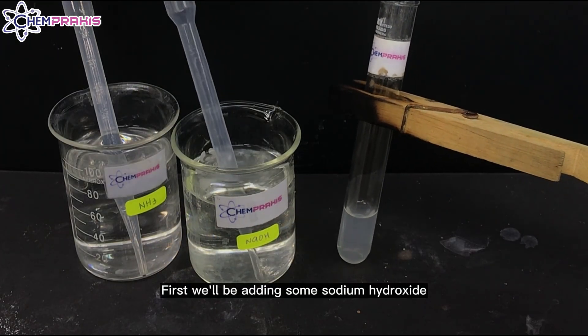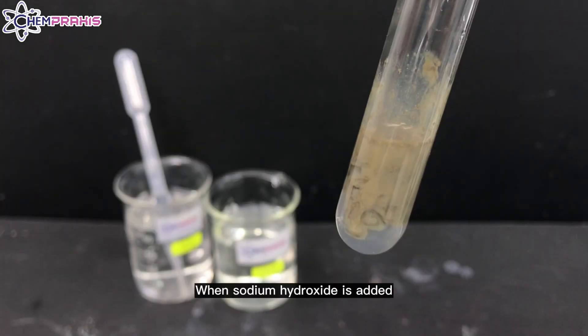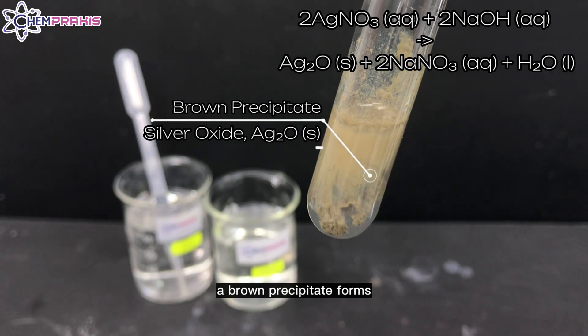First, we'll be adding some sodium hydroxide to a test tube containing silver nitrate. When sodium hydroxide is added, a brown precipitate forms.